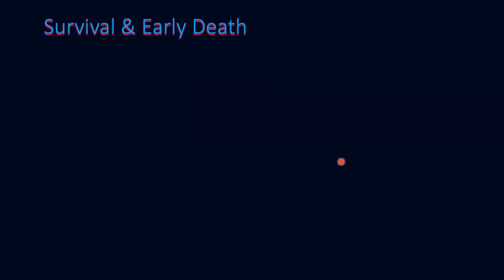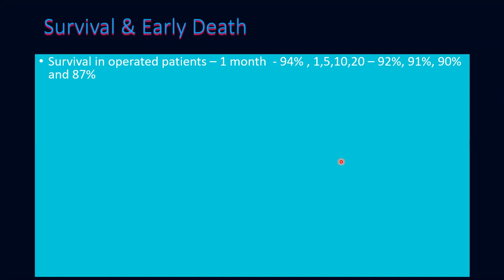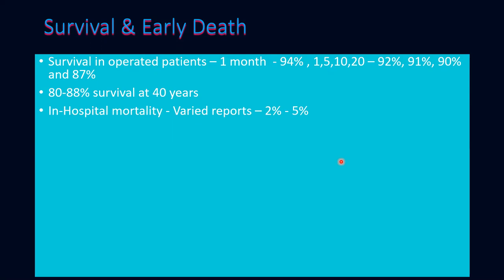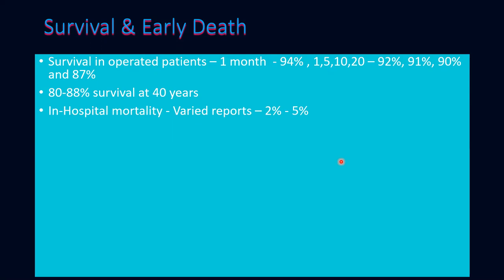Regarding survival after tetralogy of Fallot repair: survival at one month is 94%, gradually decreasing to 87% by 20 months but remaining in the 90% range in the current era. Late survival at 40 years is reported at 80 to 88%. In-hospital mortality reports vary from 2 to 5%. Incremental risk factors for early death include age less than 3 months at repair; the same applies to older age at repair.